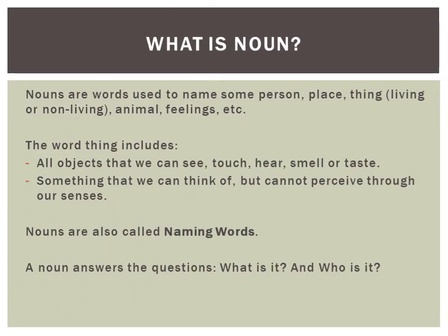What is a noun? Nouns are words used to name some person, place, thing, living or non-living, animal, feelings, etc. The word 'thing' here includes all objects that we can see, touch, hear, smell or taste, and also something that we can think of but cannot perceive through our senses. Therefore, nouns are also called naming words.